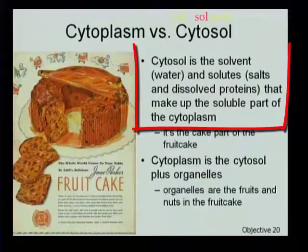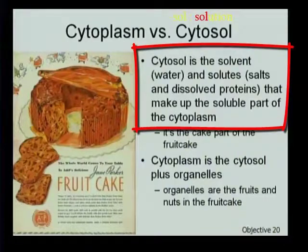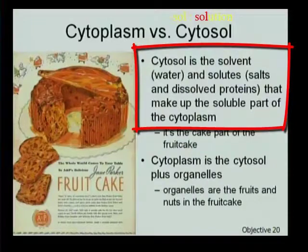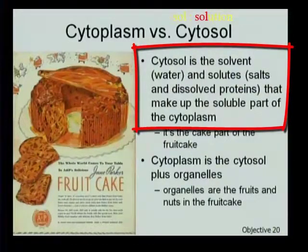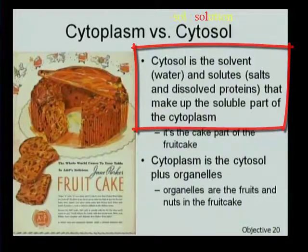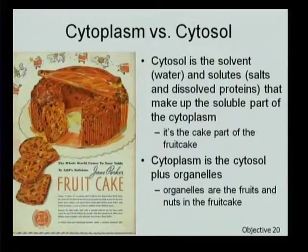The cytosol is basically a salt solution — salts and dissolved proteins dissolved in water. The dissolved proteins and salts are all of molecular or atomic size, so they're not something we can see even with an electron micrograph using conventional techniques. These are the soluble part of the cytoplasm, and using the analogy of a fruitcake, these are the cake part of the fruitcake.